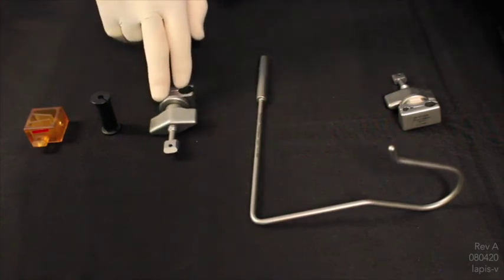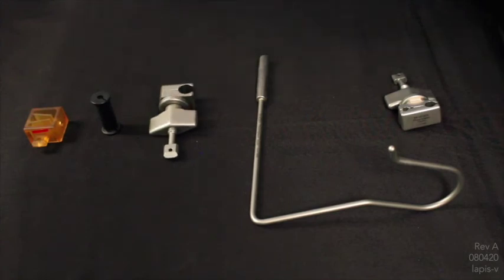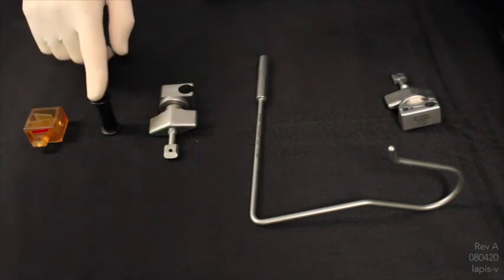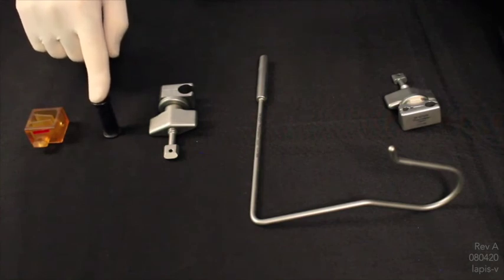The scope grip and bushing holds the scope and instruments tightly, prevents rotation of angled scopes. Bushings may be custom ordered to any size. The scope grip bushings come in 5 and 10 millimeter.